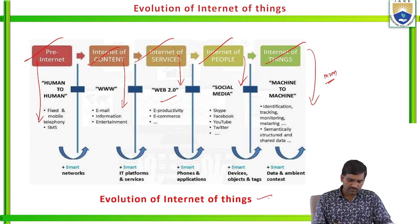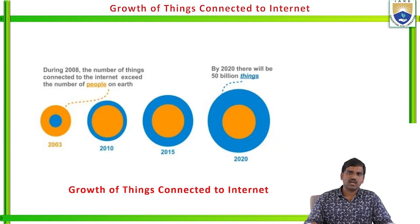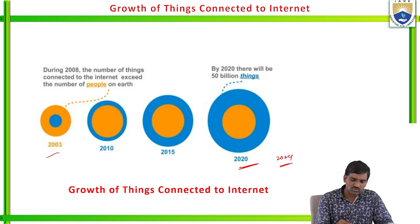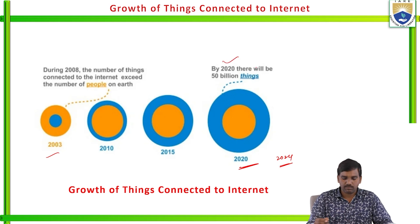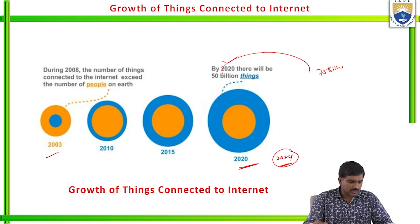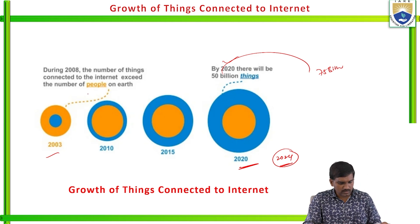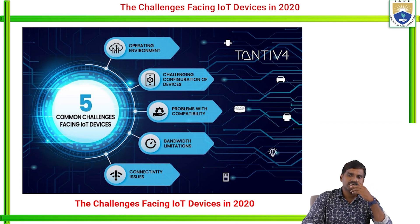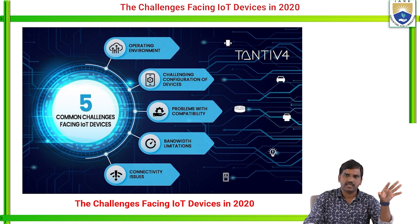This shows the evolution of Internet of Things and the growth of things connected to the internet from 2003 to 2024. By 2020, there will be 50 billion things connected to the internet, and by 2024 almost 75 billion things will be connected to the internet.